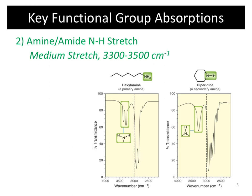Similarly, amine N-H stretches also appear in about the same region as the O-H, around 3,300 to 3,500, but they're more of a medium stretch — not as broad, not as intense. Interestingly, if you have a primary amine with one carbon attached, there are two hydrogens on that nitrogen, so you'll see two peaks in that region. A secondary amine has two carbons attached and only one hydrogen, so you see just a single peak. You can differentiate amines from alcohols because they're usually much more narrow and less intense.